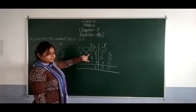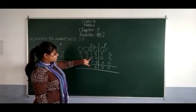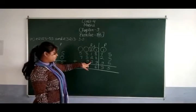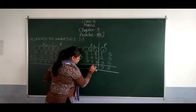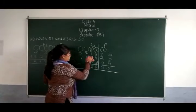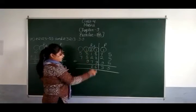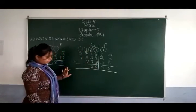3. 3, 3, 2, 5. 5 plus 7 is 12 — write 2, carry 1.